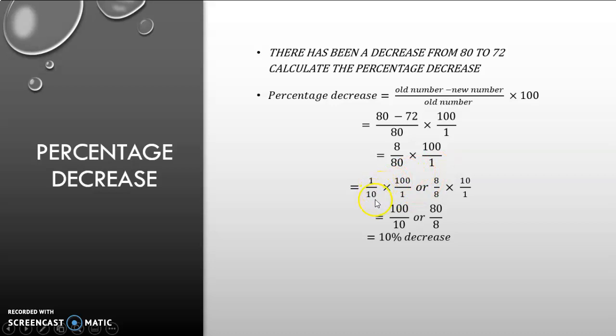Then I can look for factors. 8 and 80 both have a factor of 8, which will leave me with 1 over 10. Or I can see 80 and 100 both have 10 as factors, which will leave me with 8 and 10. So I will have 8 over 8 times 10 over 1. If I look at this example, it will give me 100 over 10. Or if I calculate it this way, it will give me 80 over 8. 100 divided by 10 is 10. 80 divided by 8 is also 10. So I have a 10% decrease.